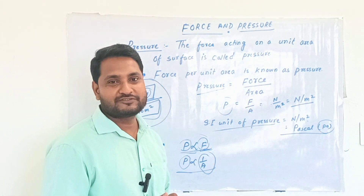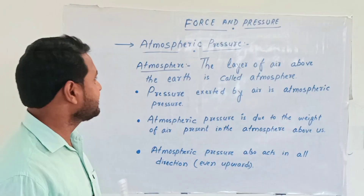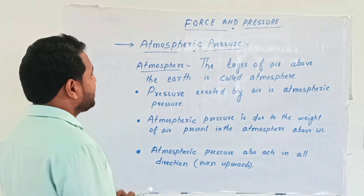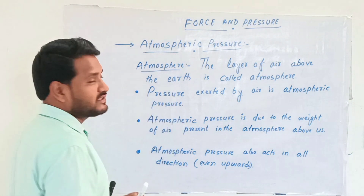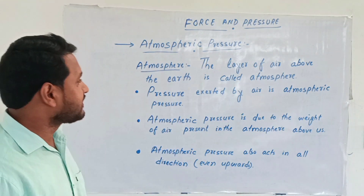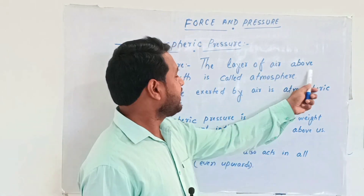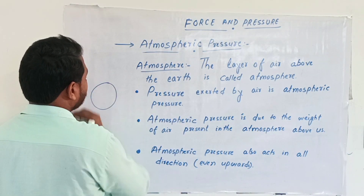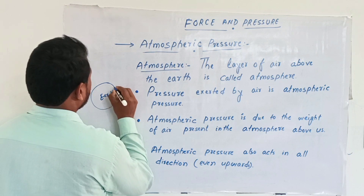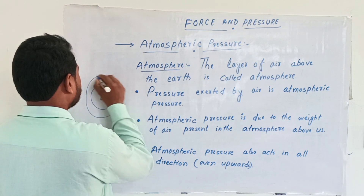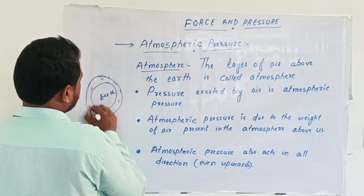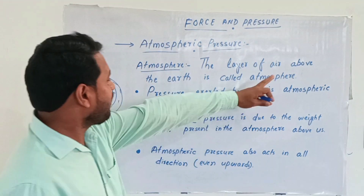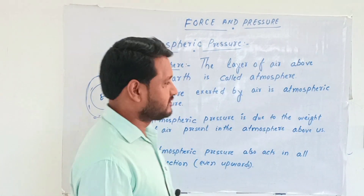Next, we are discussing atmospheric pressure. What is atmospheric pressure? First of all, what is atmosphere? The layer of air above the earth — suppose this is the earth, and this is the surrounding air of the earth — it is called the atmosphere. The layer of air above the earth is called atmosphere.